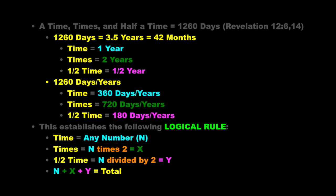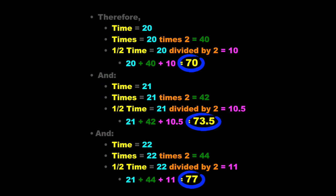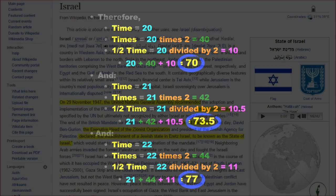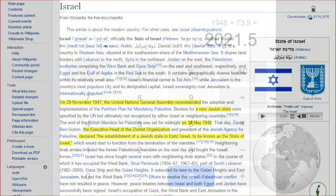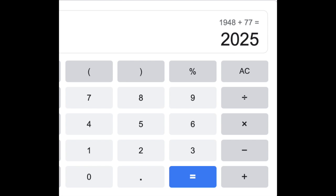According to the Bible code, the time, times, and half a time can equal any number that is the sum of a number times two and a number divided by two. It can equal 1260 days or years, three and a half years (42 months), and it can equal 70, 73.5, and 77 years. The little horn rose up in 1948; therefore 73.5 years later would be 2021, and 77 years later would be 2025. The recent Daniel fulfillments that we have seen end in 2025.